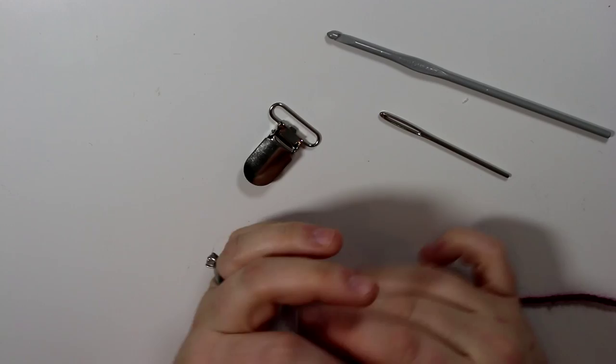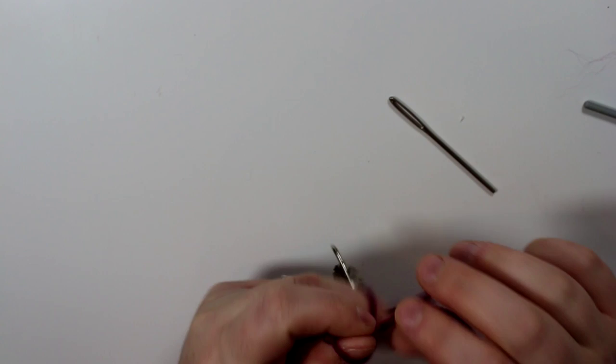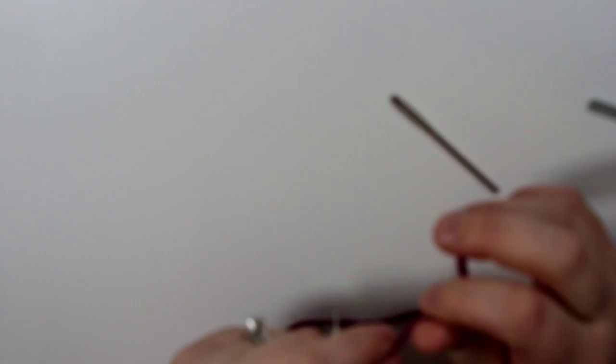I use this 3.25 millimeter crochet hook, a darning needle, and I just had some Red Heart Soft yarn laying around so that's what I chose to use today. I would probably recommend a soft yarn since it could be up against your baby's skin, so the softer the yarn the better.